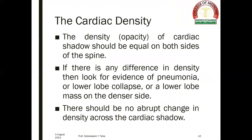The cardiac density: the density or opacity of the cardiac shadow should be equal on both sides of the spine. If there is any difference in density, look for evidence of pneumonia, lower lobe collapse, or a lower lobe mass on the denser side. There should be no abrupt change in density across the cardiac shadow.